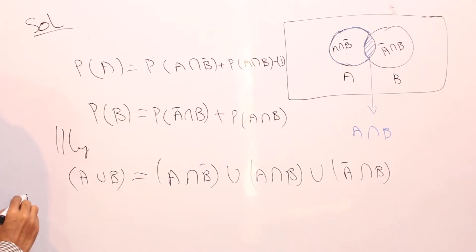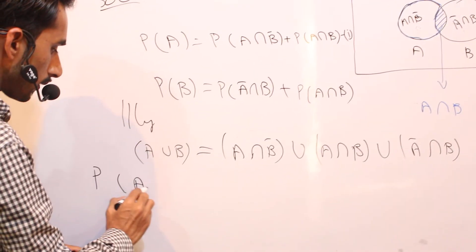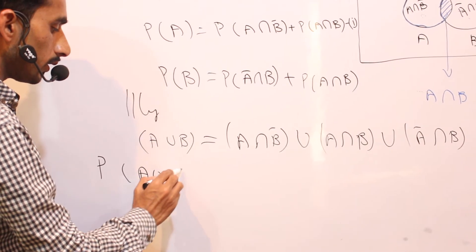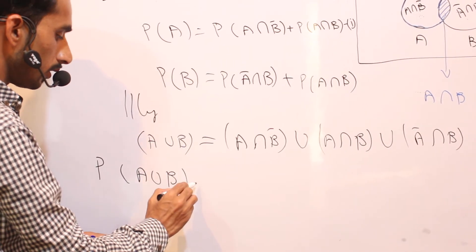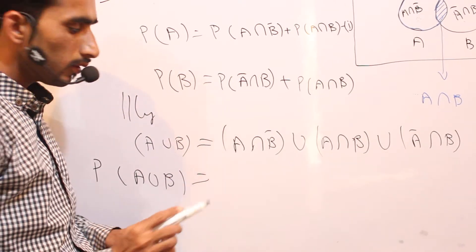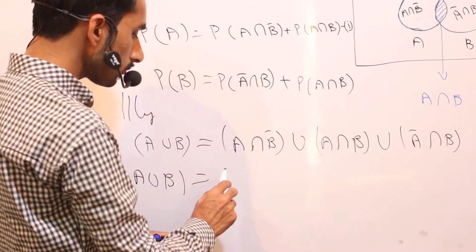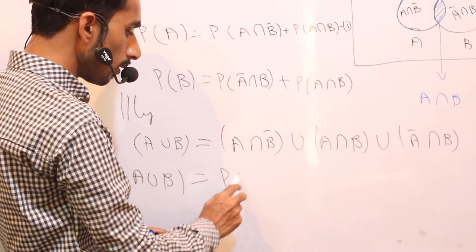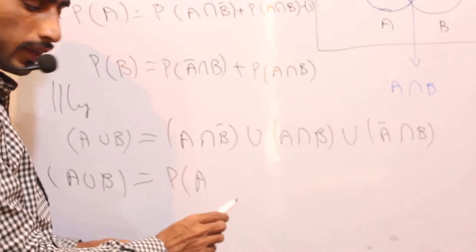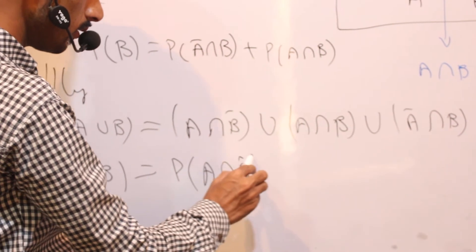Applying probability, probability of A union B is equal to probability of A intersection B-bar plus probability of A intersection B plus probability of A-bar intersection B.